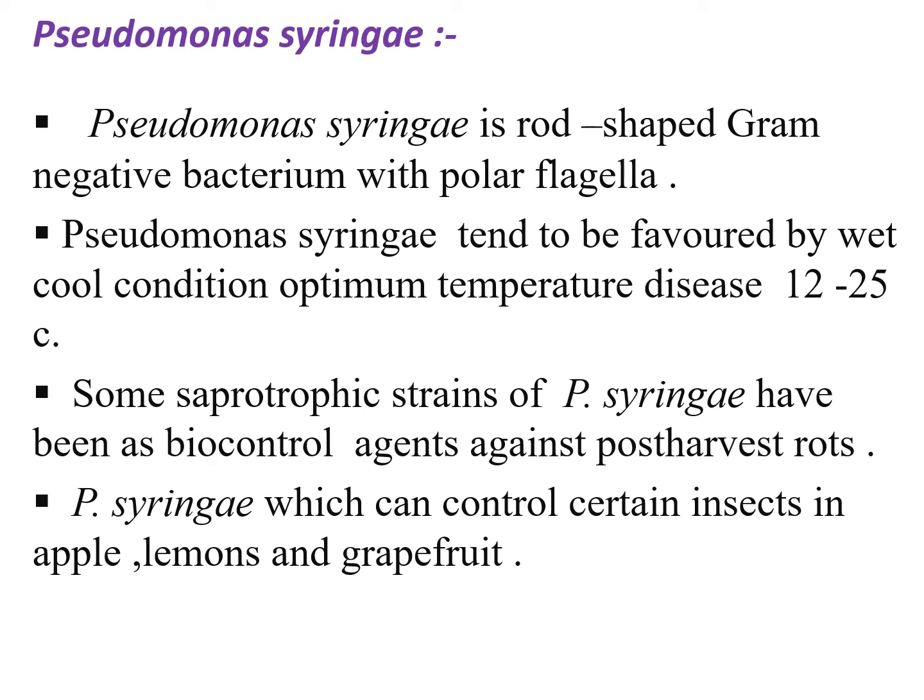The second example is Pseudomonas syringae. Pseudomonas syringae is also a rod-shaped gram-negative bacteria with polar flagella. It tends to be favored by wet, cool conditions with an optimum temperature of 12 to 25 degrees centigrade. Some saprophytic strains of Pseudomonas syringae have been used as biocontrol agents against post-harvest rots and can control certain insects in apple, lemon and grapefruit.